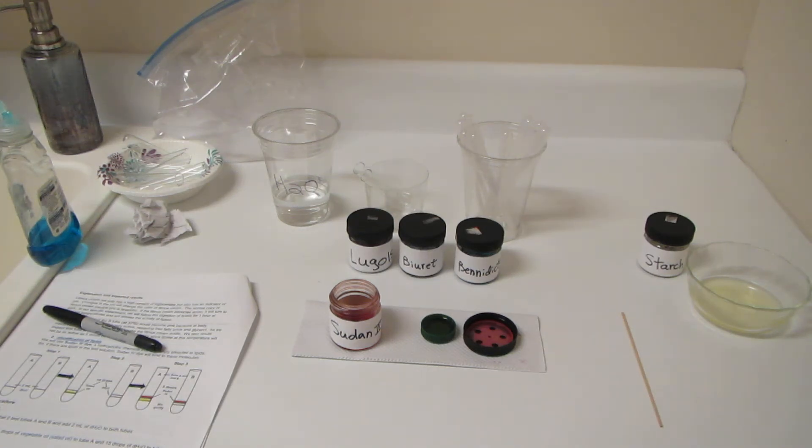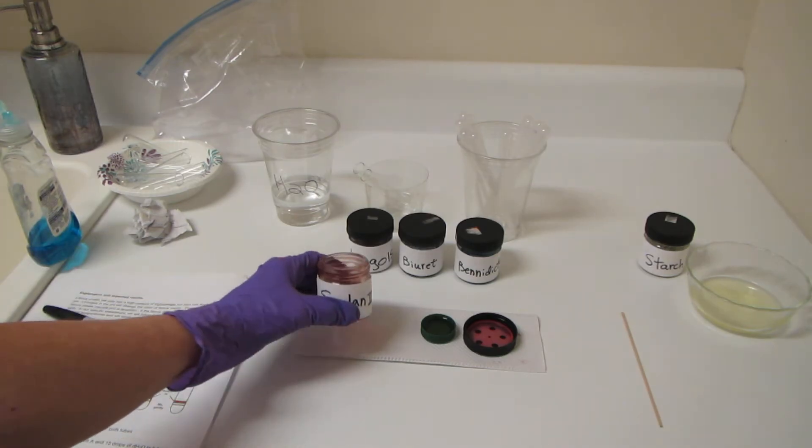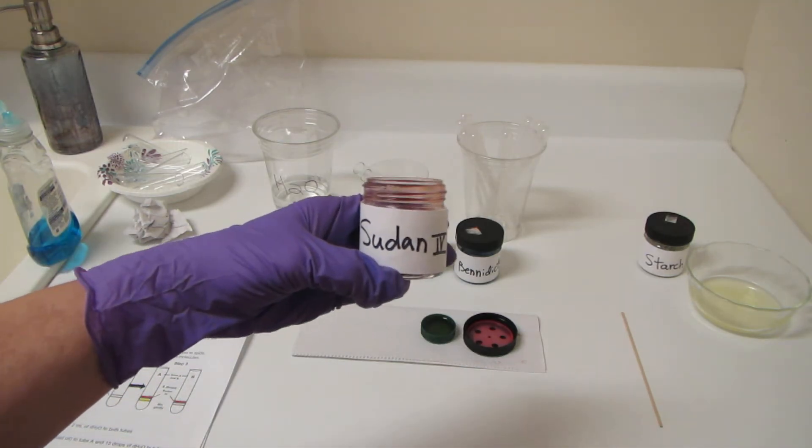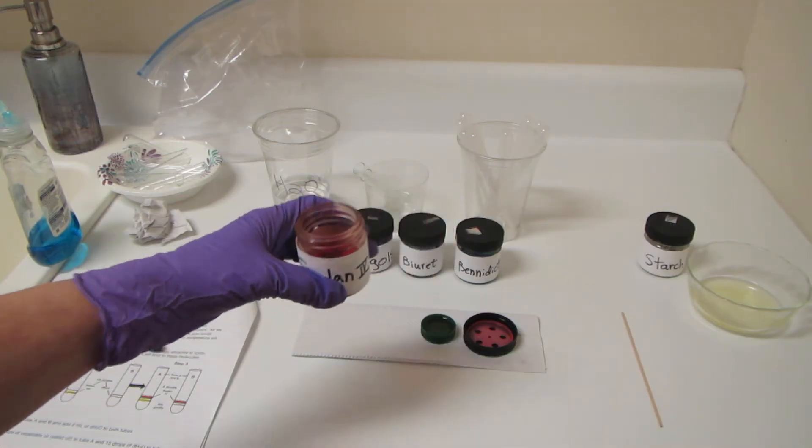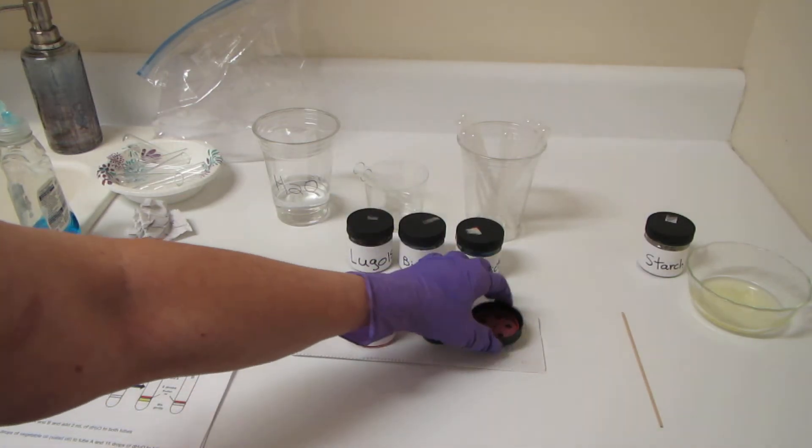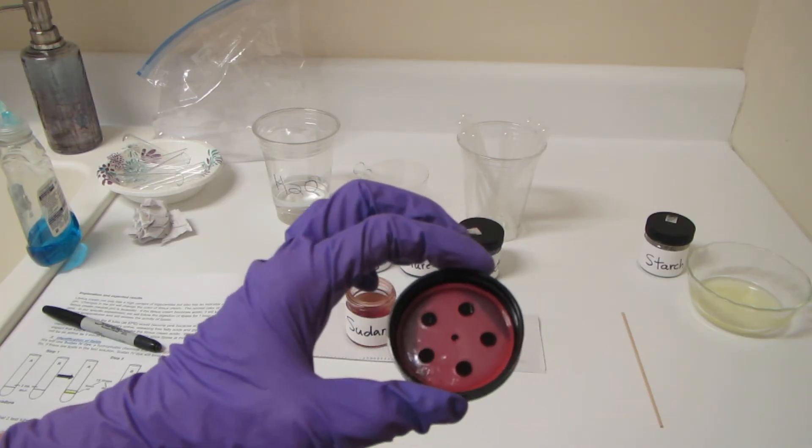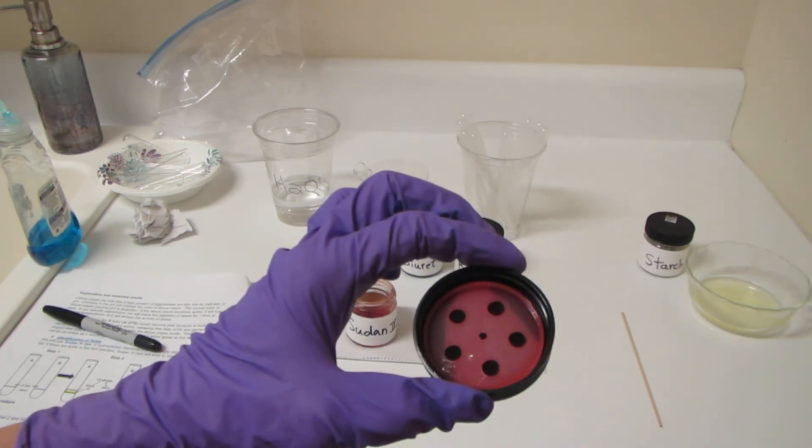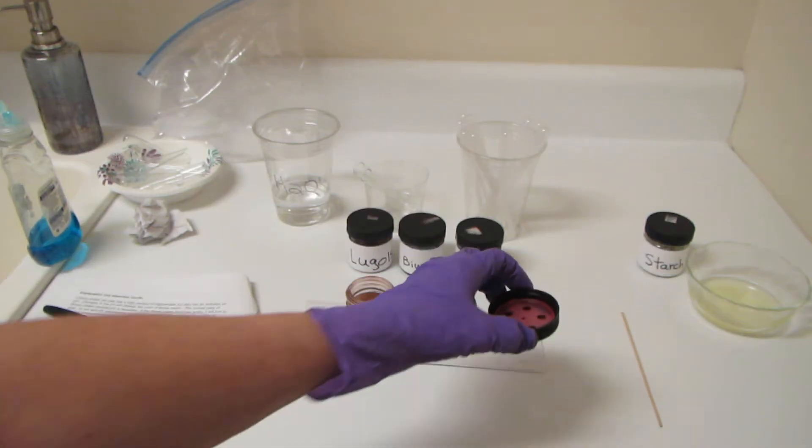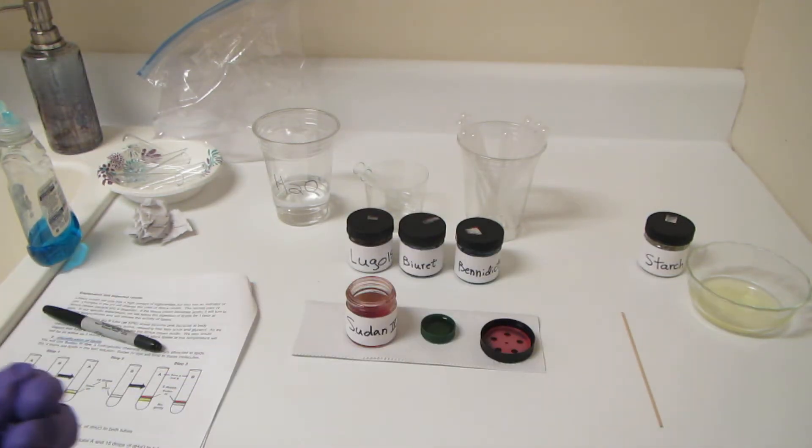Hey everybody. Let's do a little bit more digestive chemistry. We're going to take a look at Sudan 4 and how it can be used to identify fats. Here's our container of Sudan dye, and it contains this beautiful magenta dye. You can see how it dyed the white plastic this beautiful pink color here, and this can be used to identify the presence of fat.